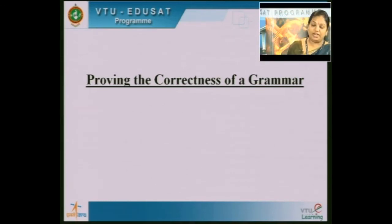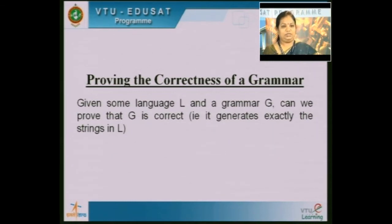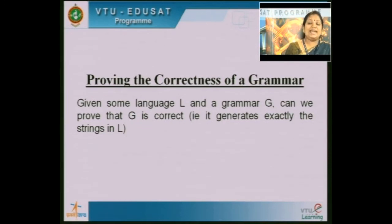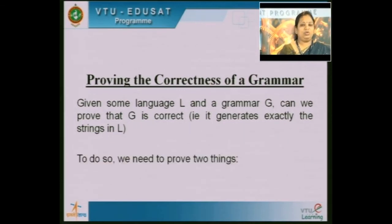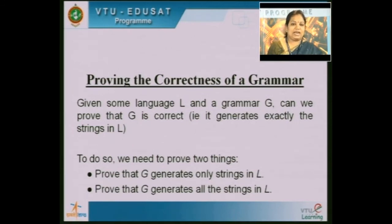This grammar is now free from both unproductive variables and unreachable variables. These are the two algorithms used to simplify the context free grammar. Next, once we have simplified the grammar, we can prove the correctness of the grammar. Given a language L and a grammar G, we prove the grammar is correct by showing it generates exactly the strings in L. To do this we prove two things: that the grammar generates all strings in L, and that it generates only strings in L.